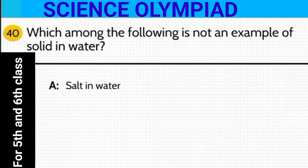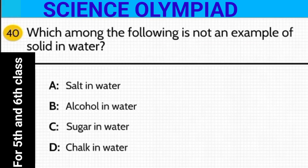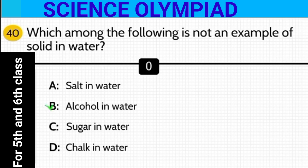Which among the following is not an example of a solid dissolving in water? Is it salt in water, alcohol in water, sugar in water, or chalk in water? The answer is alcohol in water.